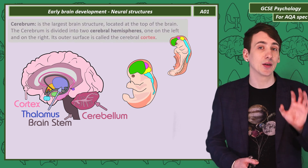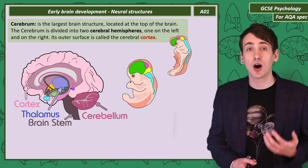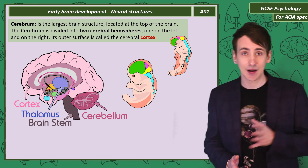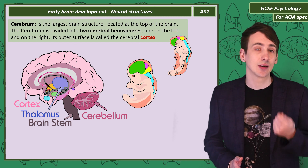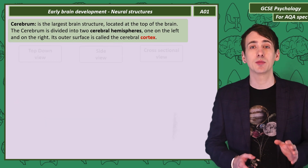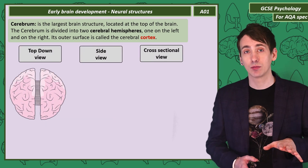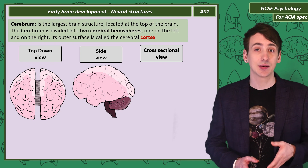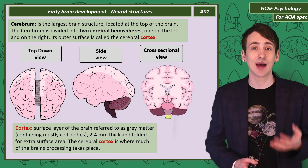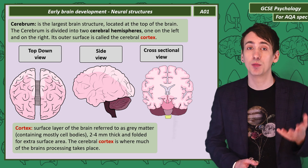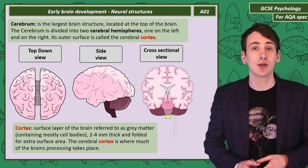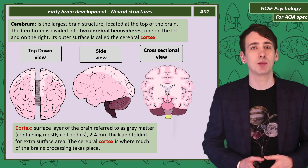We have the cerebrum at the top of the brain. It's the largest structure, and it's split into two halves — a right side and a left side — called cerebral hemispheres. You can see the cerebrum from the top down, from the side, and sliced from the front top to bottom. The cortex is the outer 2–4mm surface layer of the brain. It's folded for extra surface area and contains mostly cell bodies.